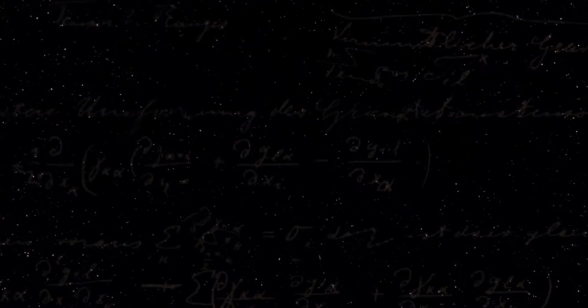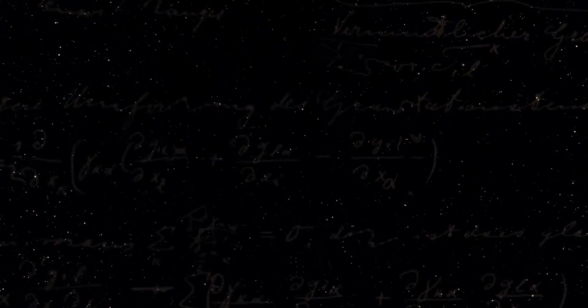Gravitational waves were predicted by Einstein almost 100 years ago. A gravitational wave is a ripple in the fabric of space and time. It's produced somewhere in the distant universe and travels across the universe. When any massive object moves, it's changing the nature of space-time. That's what Einstein told us.